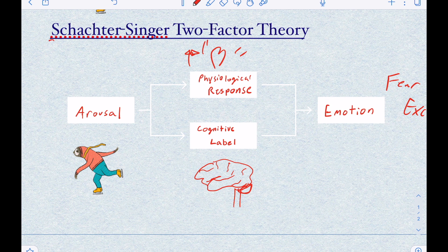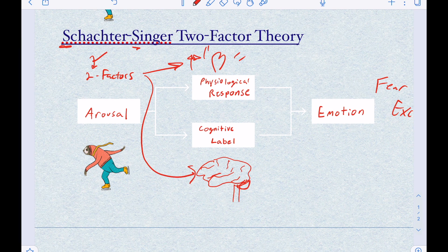In the Schachter-Singer theory, I think of SS — which stands for two factors — meaning we're taking into account two factors: my heart and my brain. Thanks for watching, make sure to like and subscribe, and I hope these mnemonics help you.